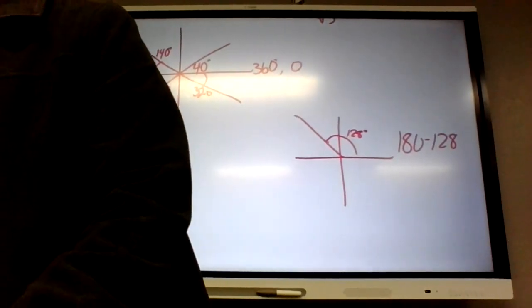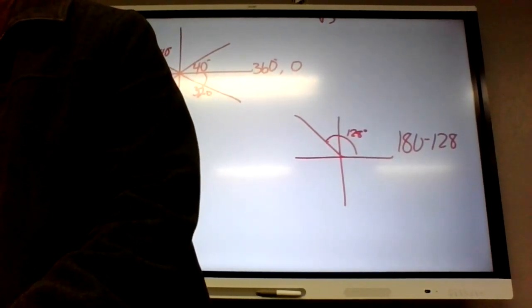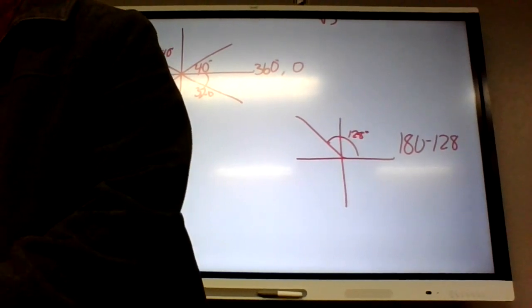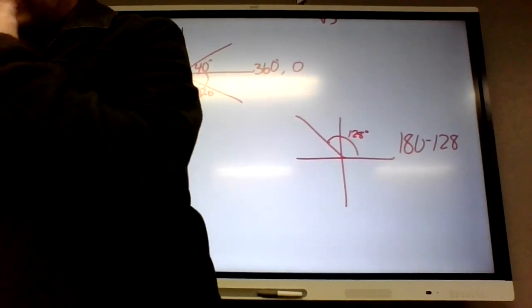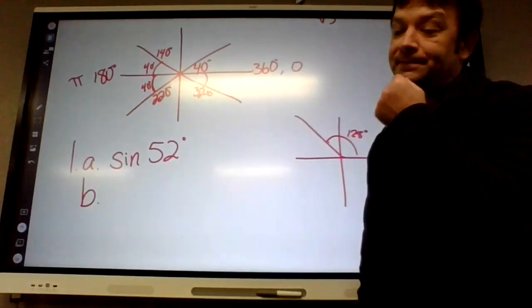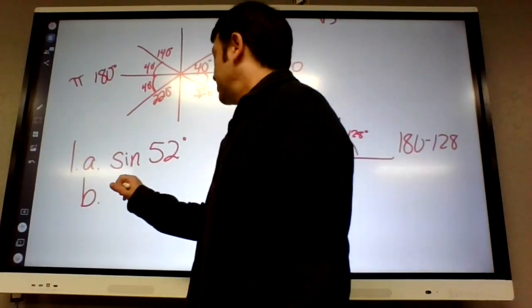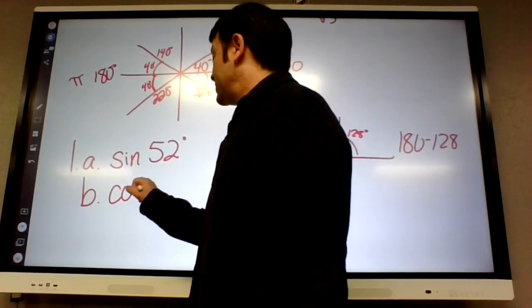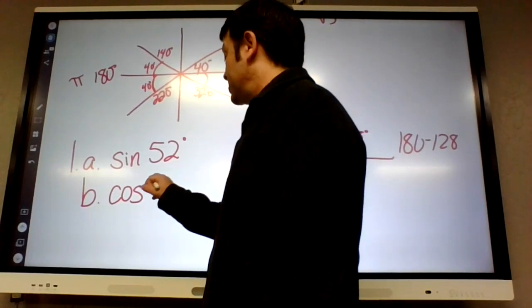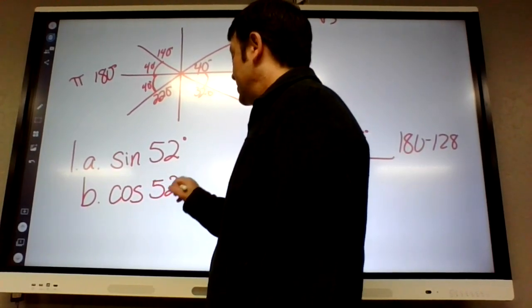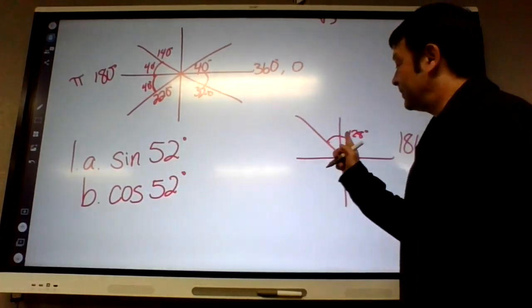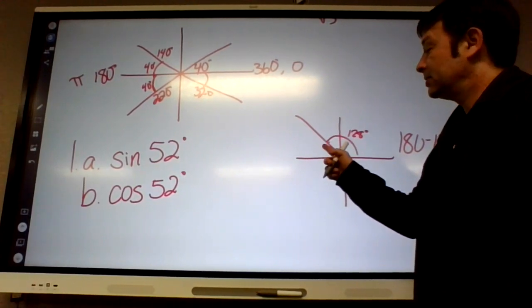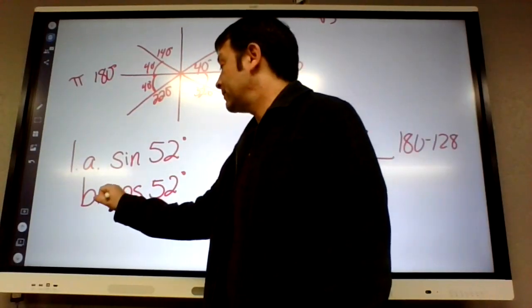This assignment's a little bit easy. Would have been a good Wednesday assignment. I should look ahead and see what we're doing. All right, cosine of 128. So it's going to have the same reference angle because it's 128 again, so it's going to be 52. But is cosine positive or negative in the second quadrant? It's negative, so we've got to put a little negative out the front of that.